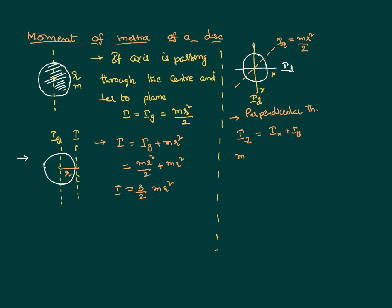Since I_z = MR²/2 and by symmetry I_x = I_y = I_diameter, we get 2·I_diameter = MR²/2, so the moment of inertia about a diameter — an axis passing through the center in the plane — is MR²/4.